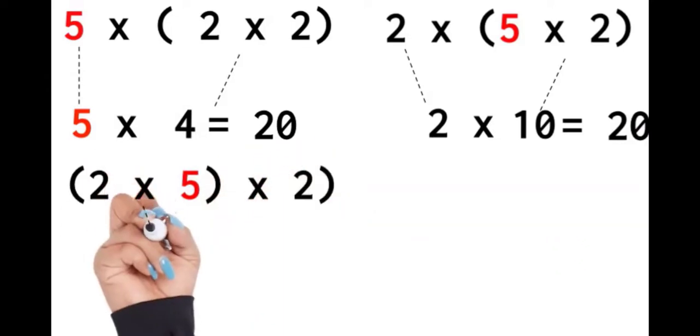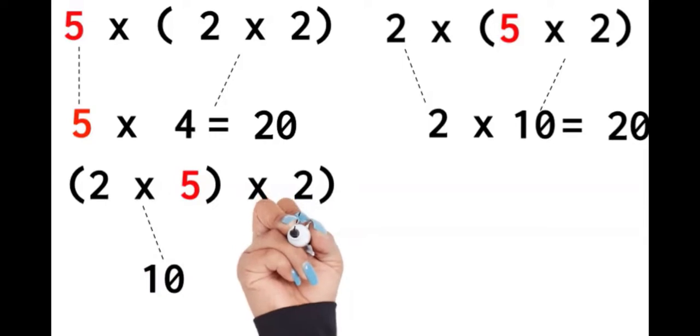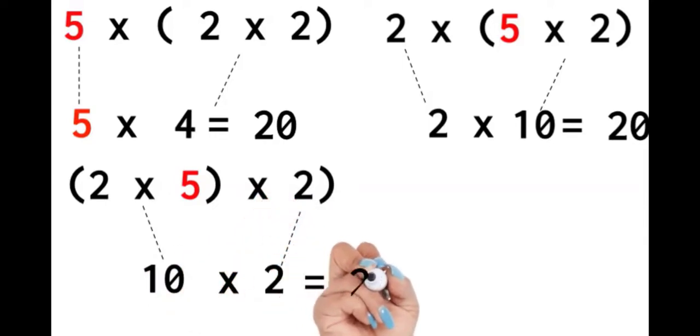Let's say I arrange the factors completely different, and I group them two times five, which is still 10. And then I multiply by two. And my answer again is 20.